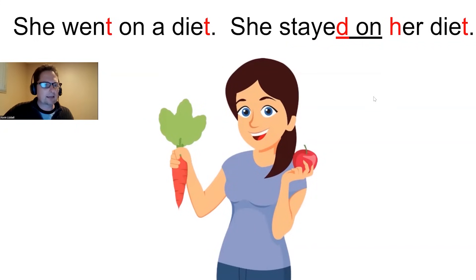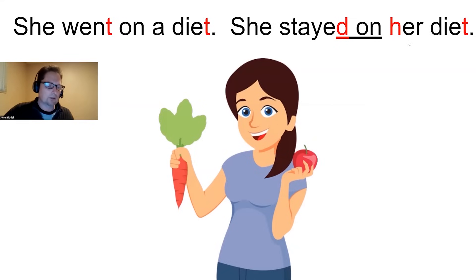Another example: she went on a diet too, and she didn't go off her diet — she stayed on her diet. Pronunciation: N-T between vowels in 'went on,' so the T is a stop T. The T in 'diet' is also a stop T — not 'diet' but 'diet.' Link 'stayed on' — the D links to 'on.' With 'her,' the H is silent, so you hear 'on-er diet.' She stayed on her diet. Did she go on a diet? She went on a diet. Did she go off her diet or stay on her diet? She stayed on her diet.